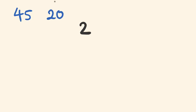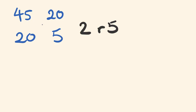First, divide the smallest into the largest: 20 into 45 goes 2 times with a remainder of 5. Move the remainder across to the next stage, and the smaller number 20 also moves down. Then 20 divided by 5 goes 4 times with no remainder — so 5 is our greatest common factor.